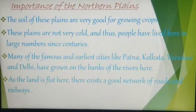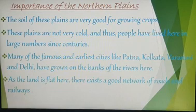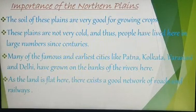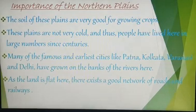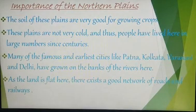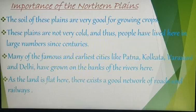Very important places like Varanasi and Haridwar lie in these regions, and they are very holy places because of the River Ganga flowing through them. That is why many people believe in living or residing on the banks of these rivers. As the land is flat — plains means lowlands or flatlands — a good network of roads and railways is found here. Whenever there are flatlands, it is very easy to build roads and railways, which is much tougher in mountain and plateau regions.